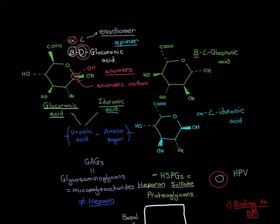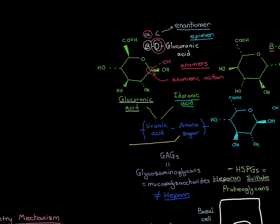Now let's go through some examples of amino sugars which can be glycosidically linked to the uronic acid sugar to make these disaccharides out of which we construct glycosaminoglycans. There are two examples of amino sugars: the first is glucosamine, which is an amino sugar derived from glucose.